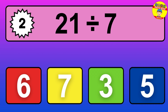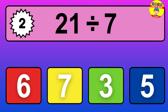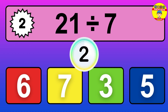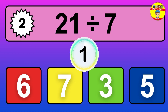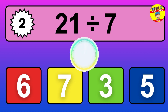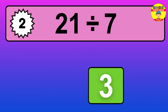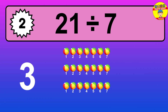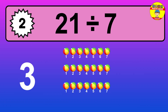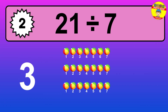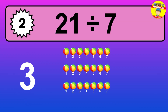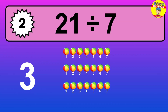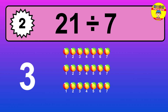21 divided by 7 — it's time to think. Let's go to the solution. Divide the number 21 by 7. Each group contains 7 units, so dividing 21 by 7 results in 3 equal groups. Thus, the result is 21 divided by 7 equals 3.